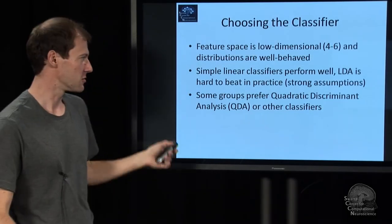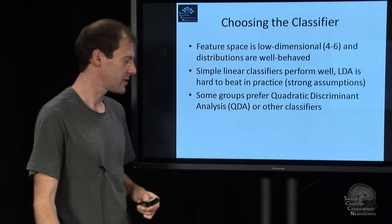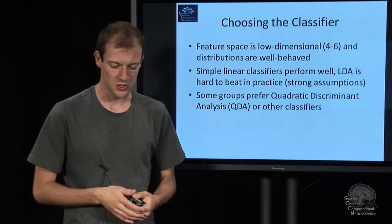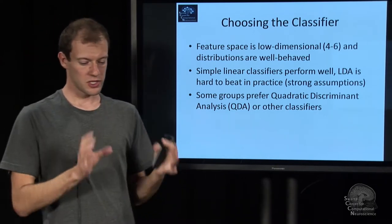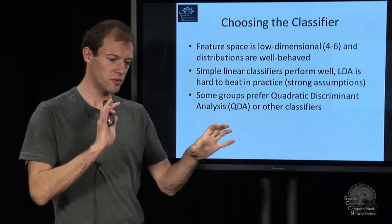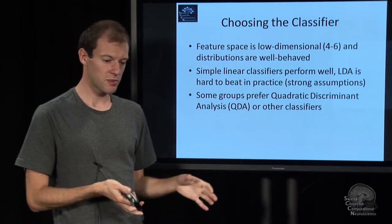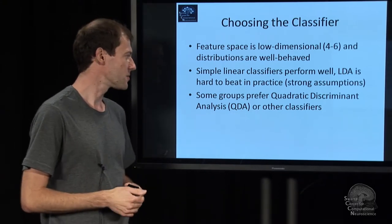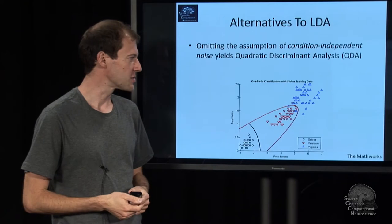Linear discriminant analysis, quadratic discriminant analysis, and so on. The data is statistically well-distributed — basically Gaussian, approximately, after the log transform.